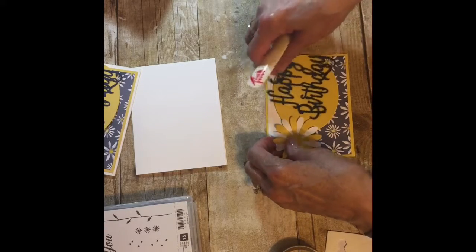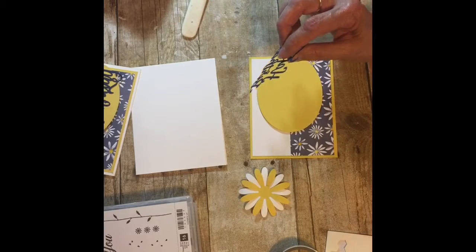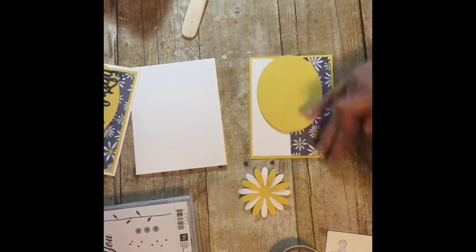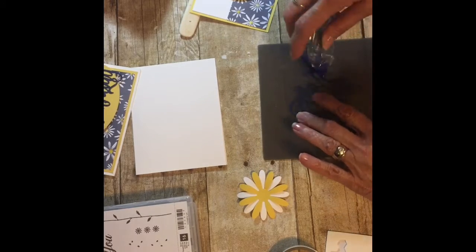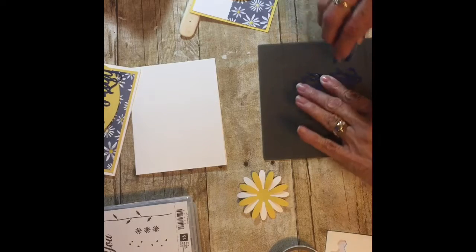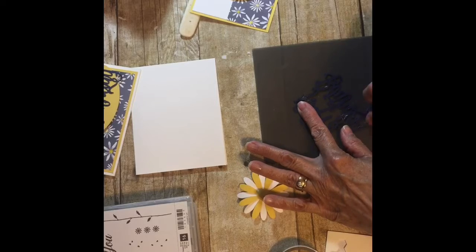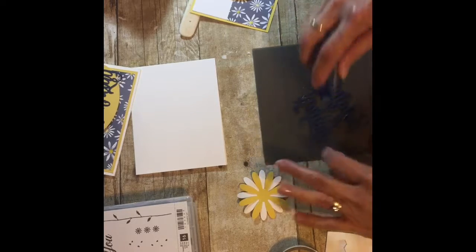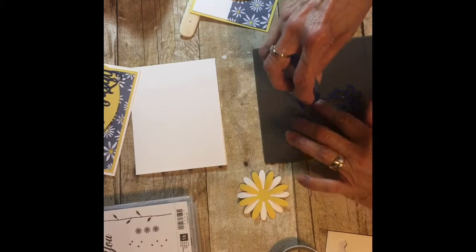I think we've got to put the happy birthday on first. I'm going to get my little silicone mat, flip this over, and you can do this or you could use your fine tip glue pen. I didn't have my lid on right so it won't work. I'll have to get another one.